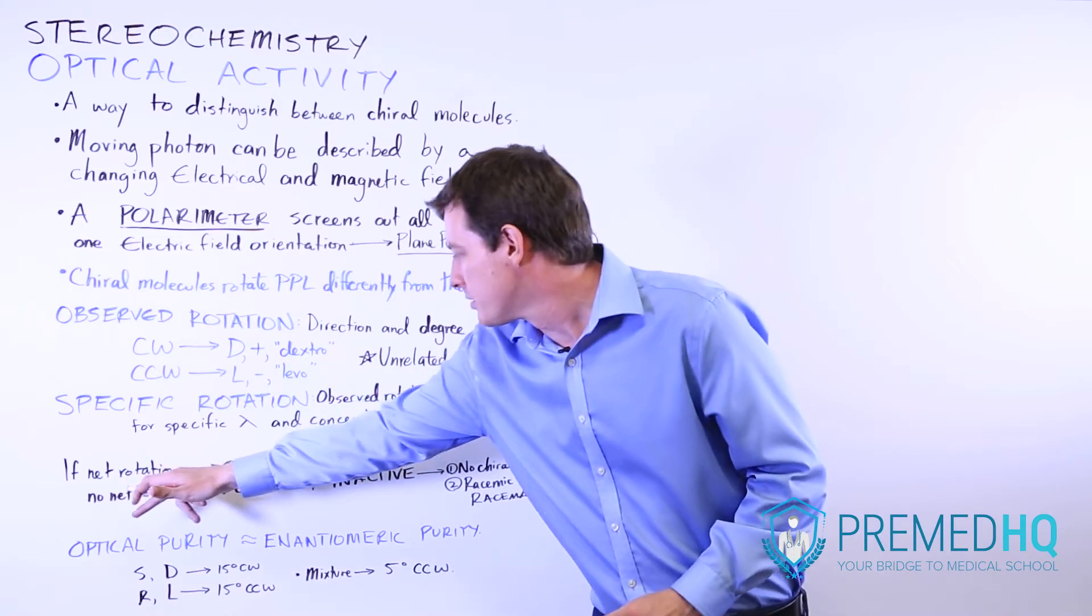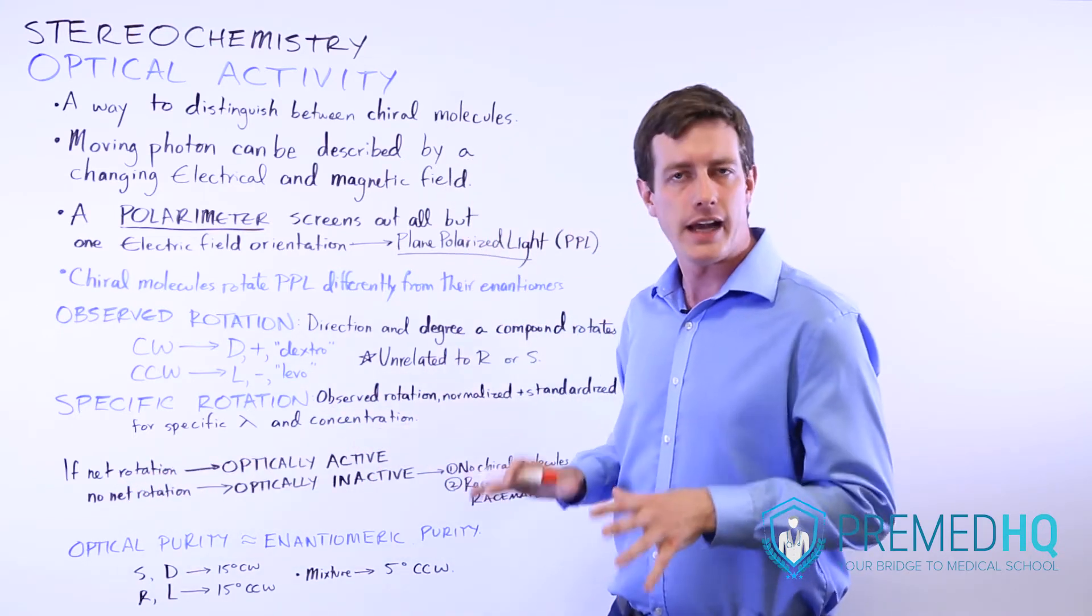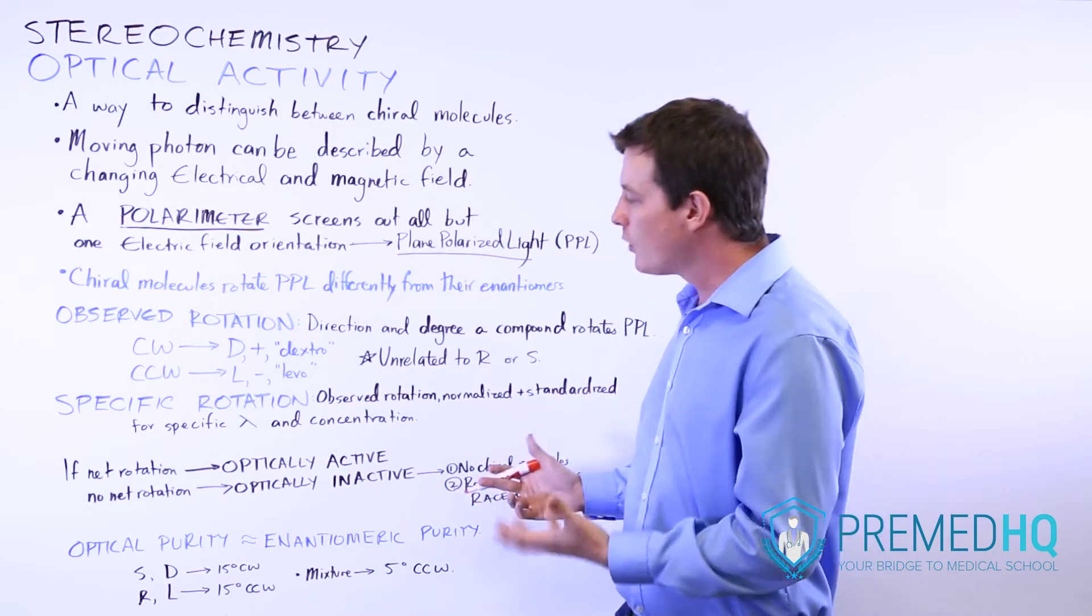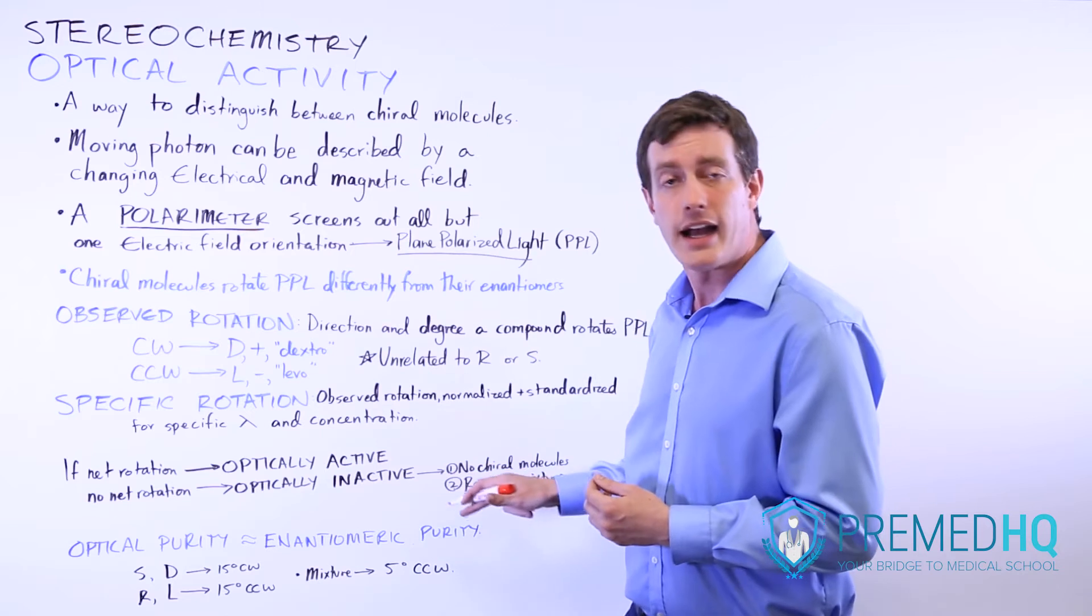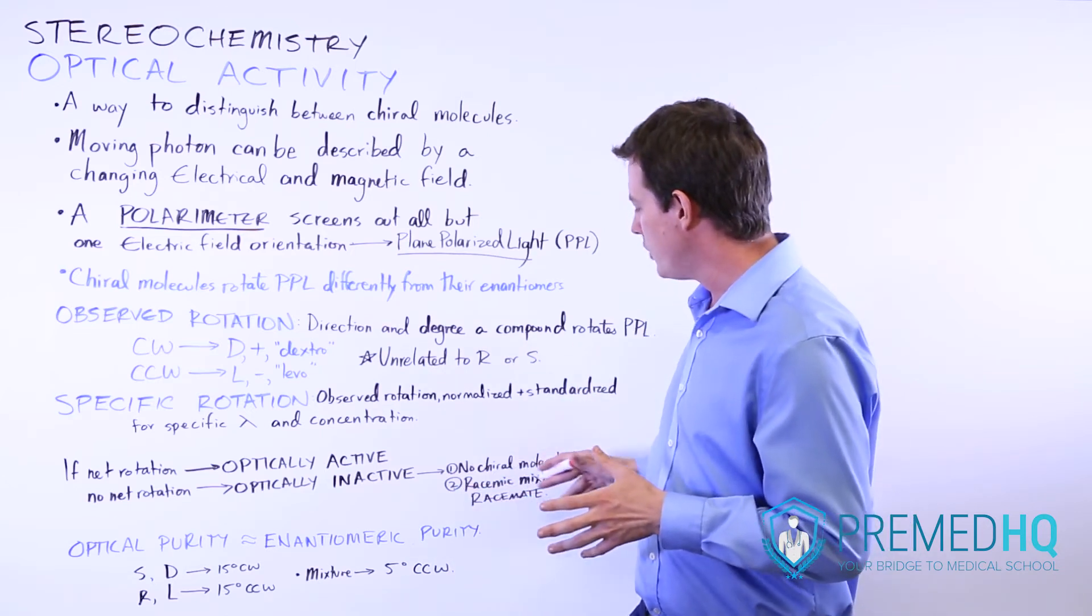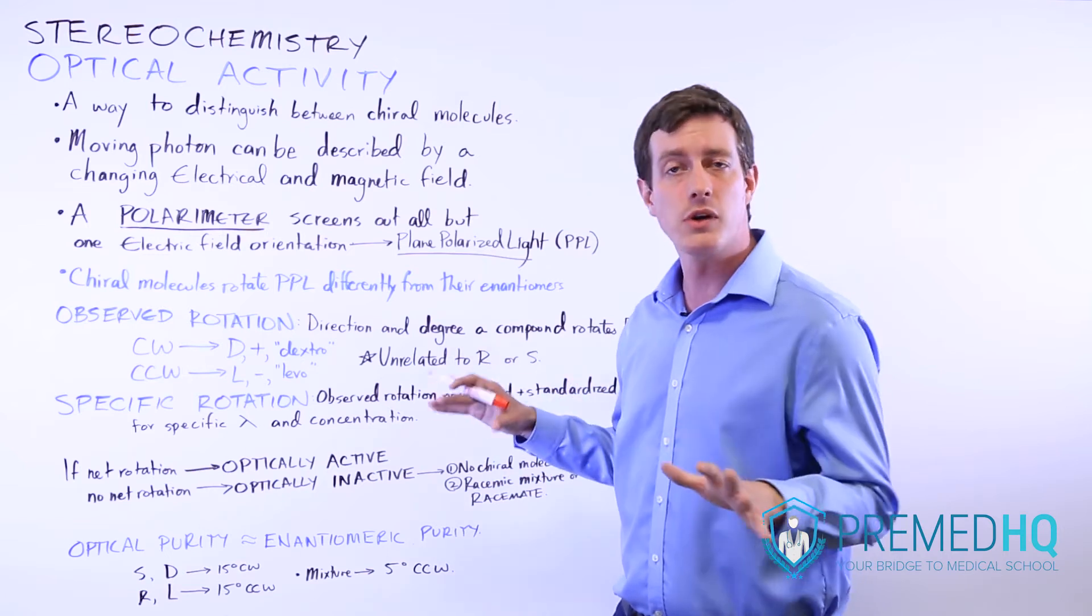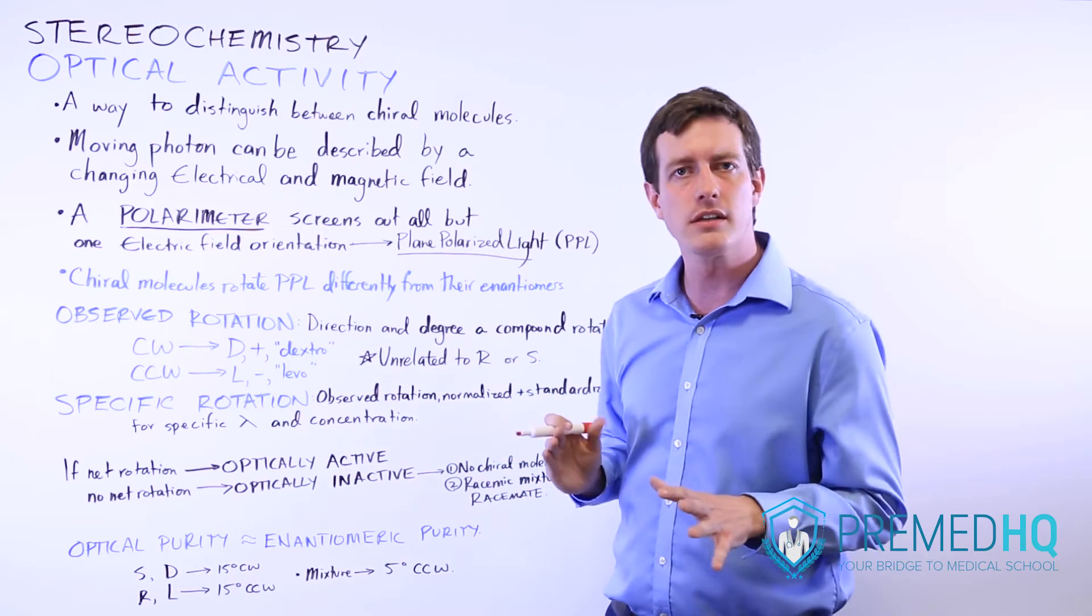If they rotate something, then compounds or mixtures are called optically active. If they don't rotate it, if there's no net rotation, then they're optically inactive. One thing that you can think about is that these must have no chiral molecules. If there are no chiral molecules, there is no optical activity of rotating light one way or the other.